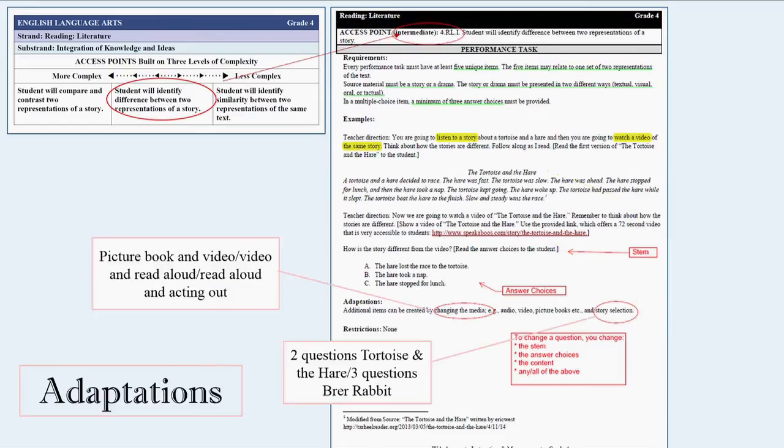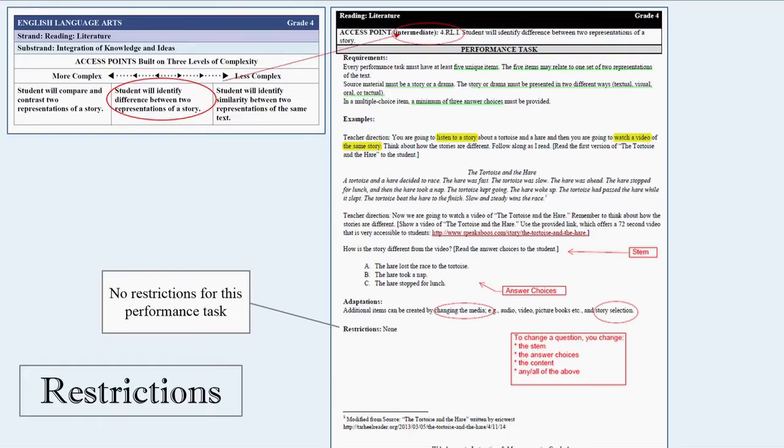The last part, again, is your adaptations. If you're doing a lot of stories, you could talk about differences across tortoises and hares and then differences across rabbits, if you're into rabbit stories and lots of moral lessons with those. Book and video, video and read aloud, read aloud and acting it out. There are no restrictions. There are very few restrictions most of the time. This gives you guidance and the pieces are here and this is in the back of your book too. I either would change the stem to change a question or I just change the answer choices.